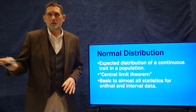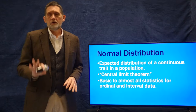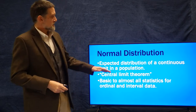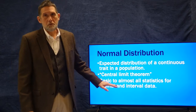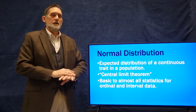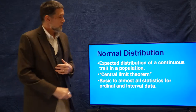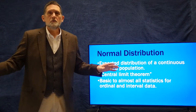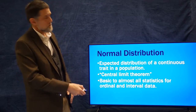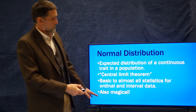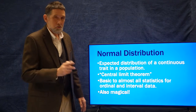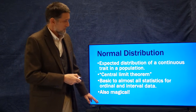The statistics for nominal data is based on a different set of theorems, but basically according to the central limit theorem, if you have a continuously distributed trait in a natural population and you visualize it on a histogram, you'll get something that is magical — and I'll show you why — that's going to look like this.